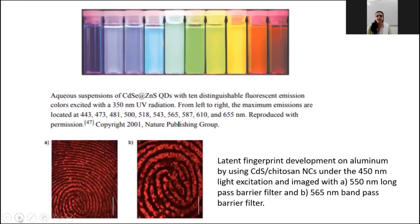An aqueous suspension of cadmium selenide with zinc sulfide quantum dots with 10 distinguishable fluorescent emission colors excited with 350 nanometer UV radiation is shown here. From left to right, emissions are located at 443, 473, and so on with varying maximum emission wavelengths. These nanomaterials have maximum absorption with lower emission and can be modulated through incorporation of different ligands to target specific components of fingerprint or sweat residue. Similar to SPR — where we add fluorescent dyes to solutions to make fingerprints visible — here we also need a substrate and then quantum dots or other specific nanomaterials.